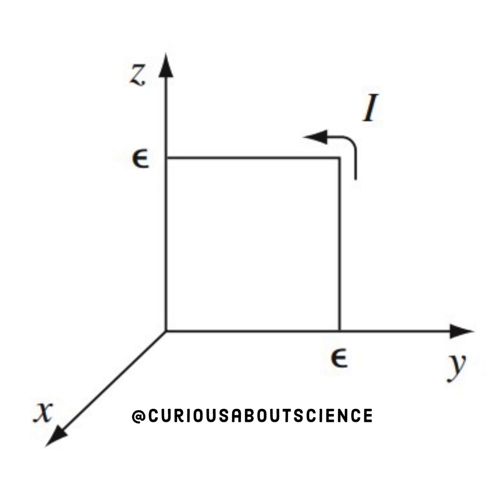So we have here x, y, and z coordinates, square of length epsilon. So our vector area will be epsilon squared, and current running what seems to be counterclockwise to produce a torque or a field in the x direction.